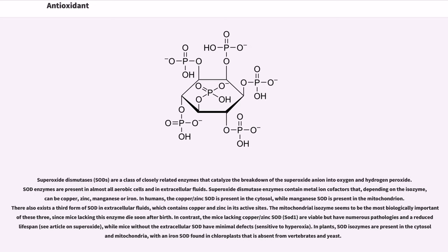Superoxide dismutases (SODs) are a class of closely related enzymes that catalyze the breakdown of the superoxide anion into oxygen and hydrogen peroxide. SOD enzymes are present in almost all aerobic cells and in extracellular fluids. Superoxide dismutase enzymes contain metal ion cofactors that, depending on the isozyme, can be copper, zinc, manganese or iron.